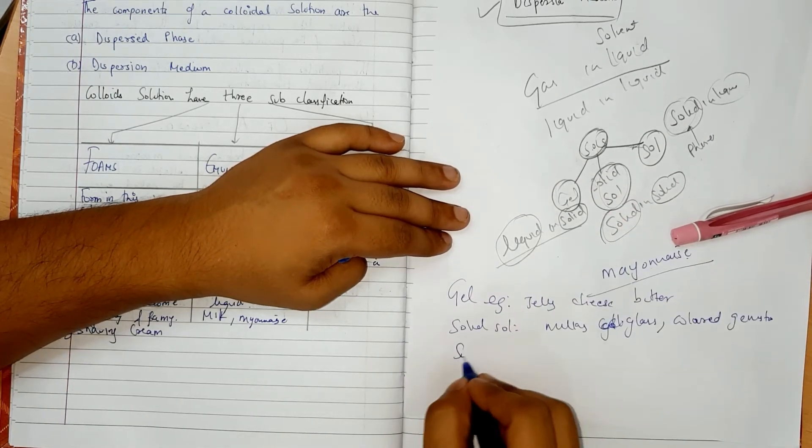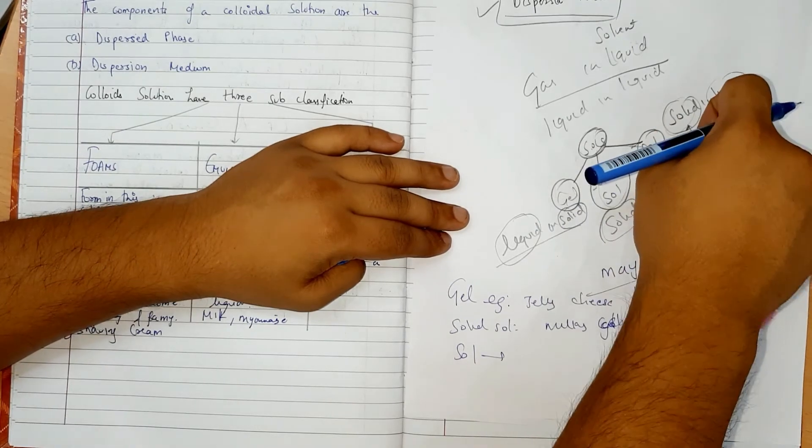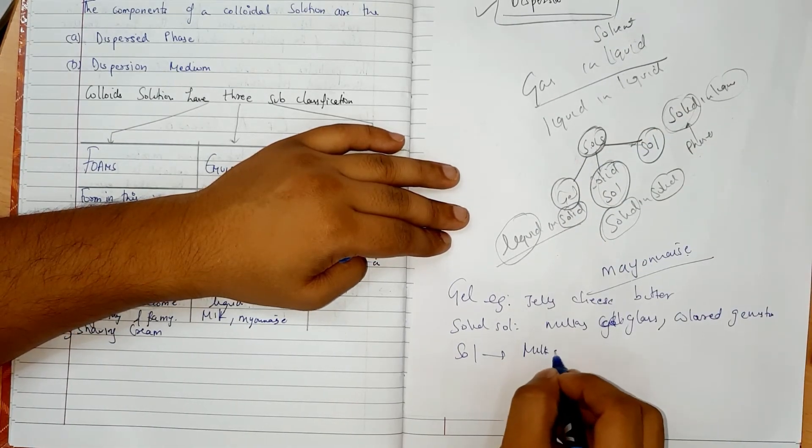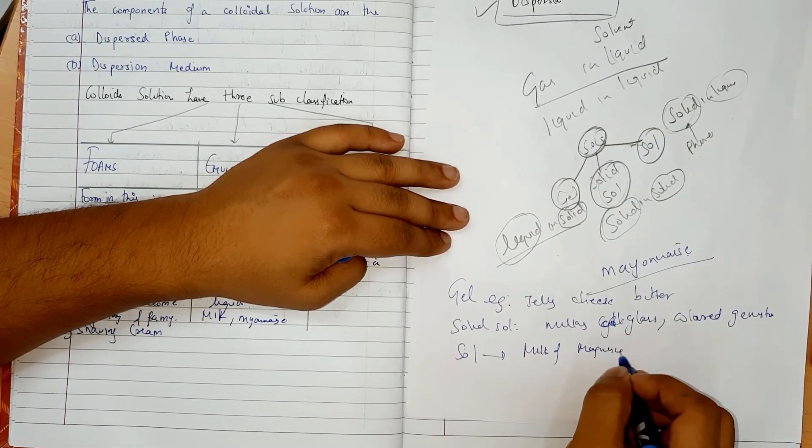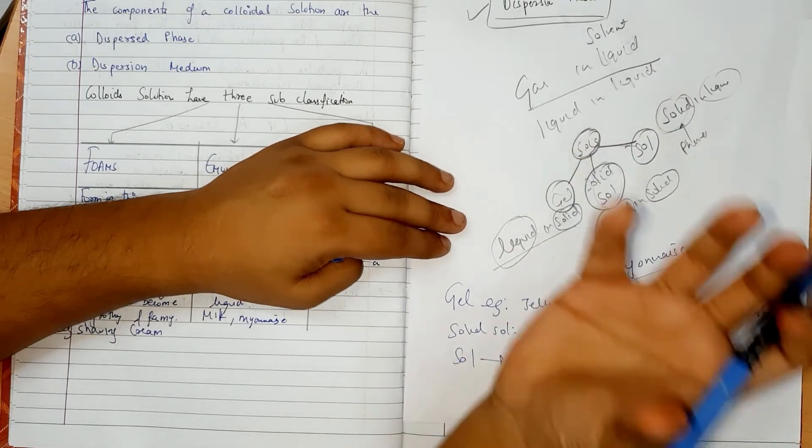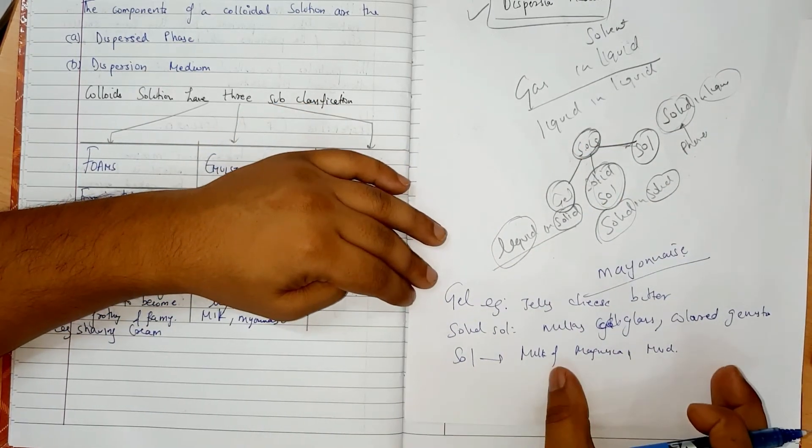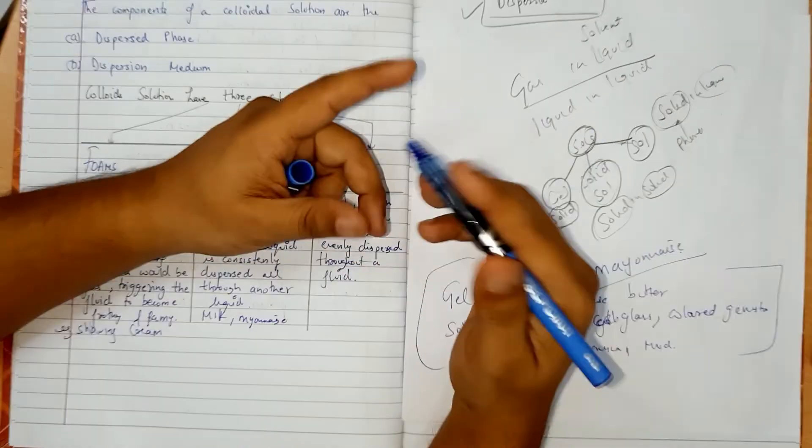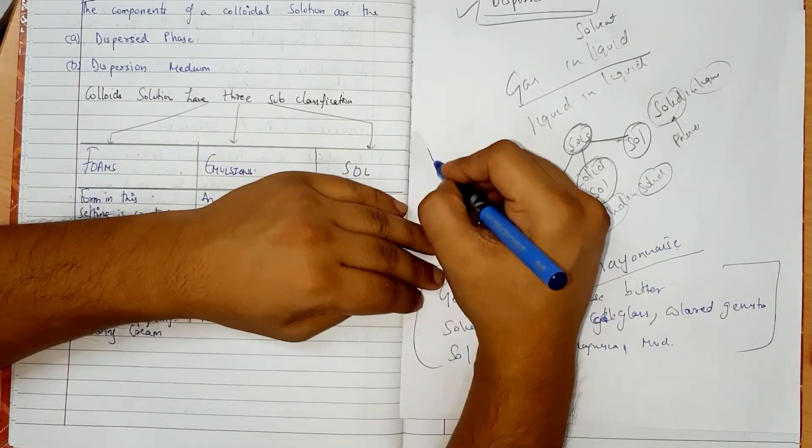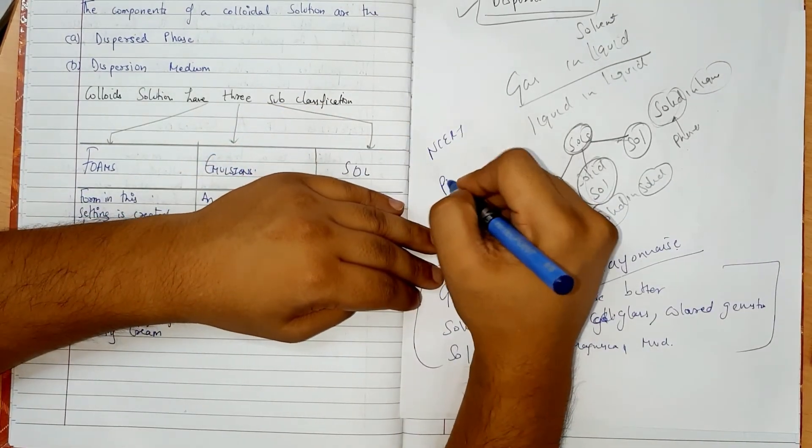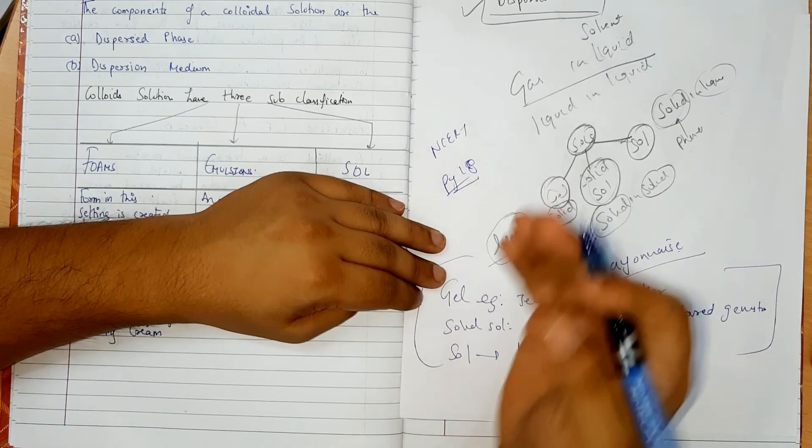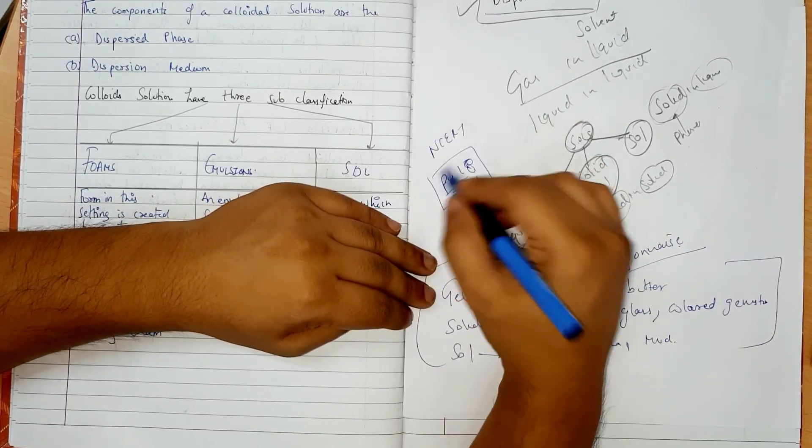Third we have sol. When the sol is dissolved in the liquid. For example, milk of magnesium and we say directly mud. Mud is dissolved in our liquid, so that is sol. So we have all examples. Don't play your chart, I think page number is 18. If you have to see the chart, the example will be clear.